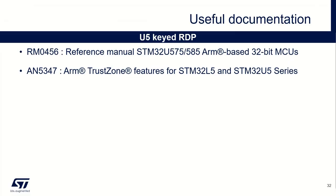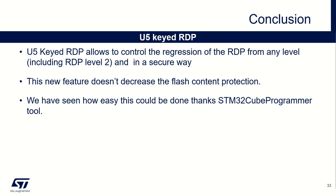We are reaching the end of this presentation. I'd like to point out some useful documentation: the reference manual and also AN5347, where you can find much information about the CAID RDP. We have seen together how U5 CAID RDP allows controlling the regression of the RDP from any level including level 2, in a secure way. You need to know the OEM key value to be able to trigger a regression. Importantly, this does not impact the level of protection of the flash content. I hope you liked this video — thank you for your attention.